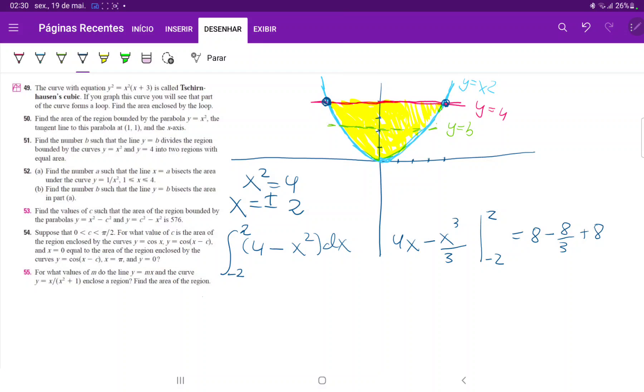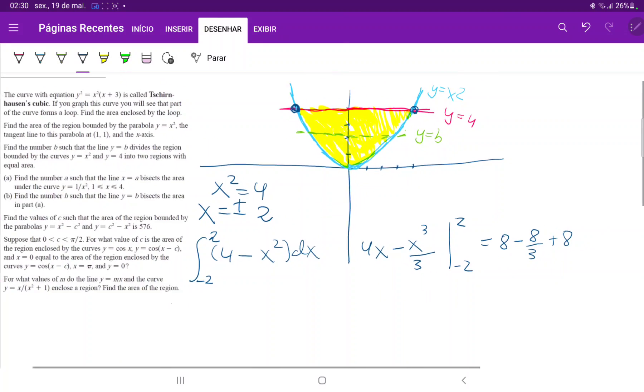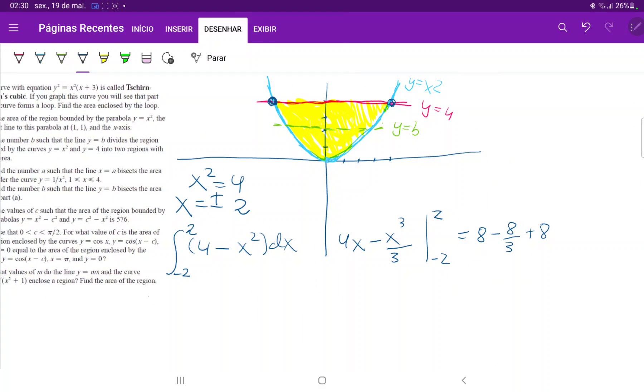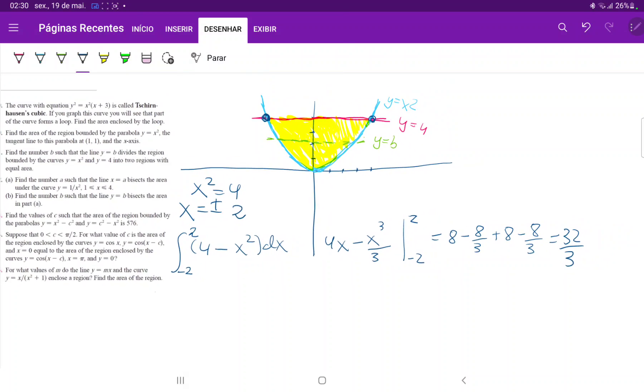Minus 8 thirds, which gives us 32 thirds. So that is the whole area.